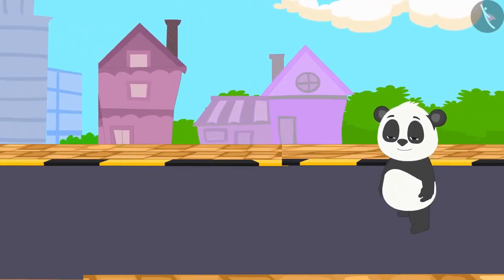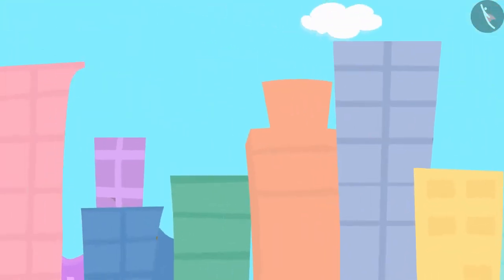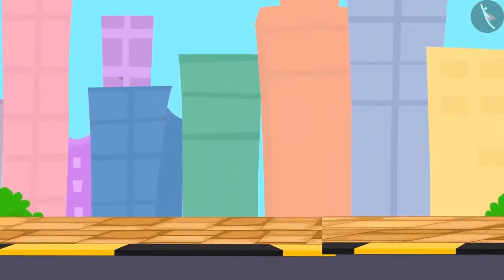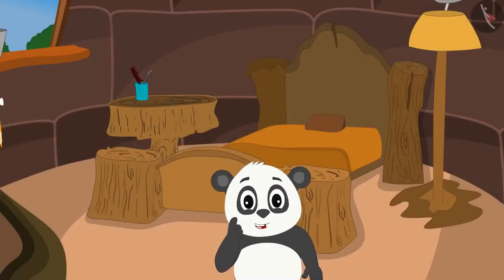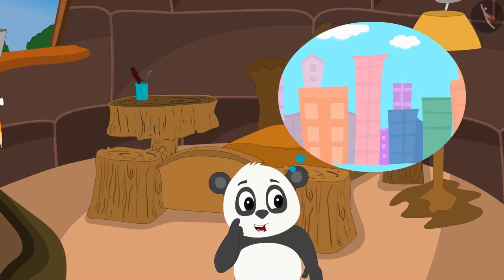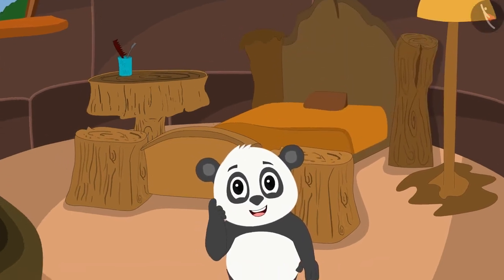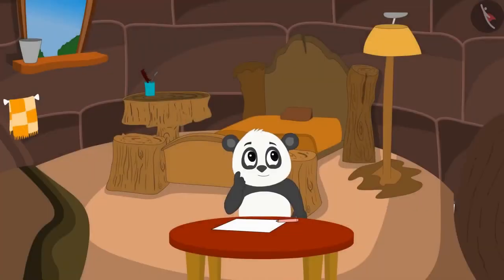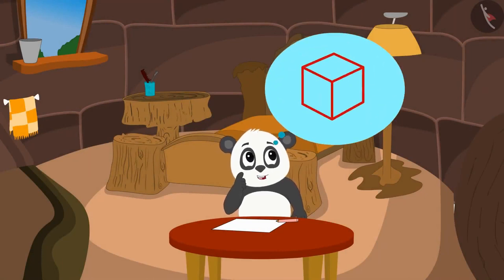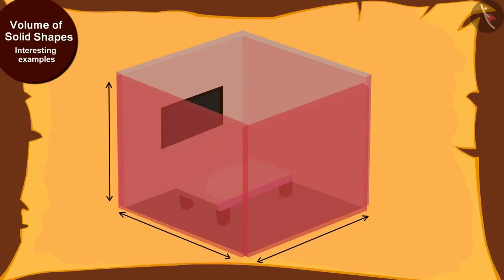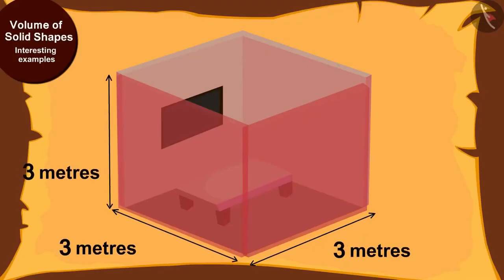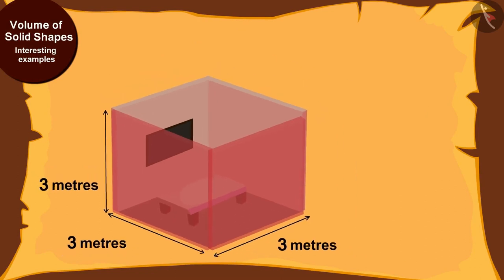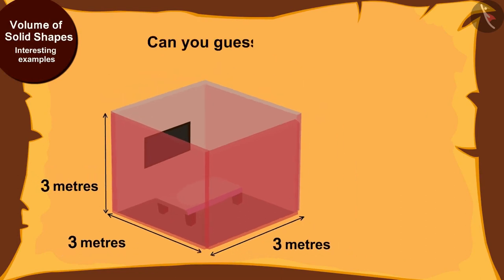When Golu went to the city, he saw very tall buildings. Why don't I build such a tall building in Champapur? Golu thought about it and started designing the building. To make each house unique, I will make it cube shaped. The sides of each house will be 3 meters long. So kids, can you guess what will be the volume of the house?